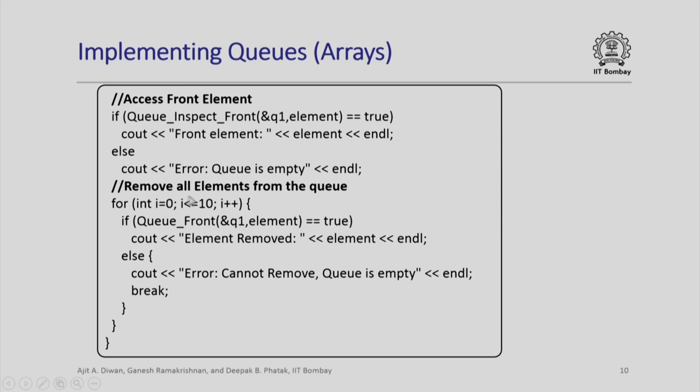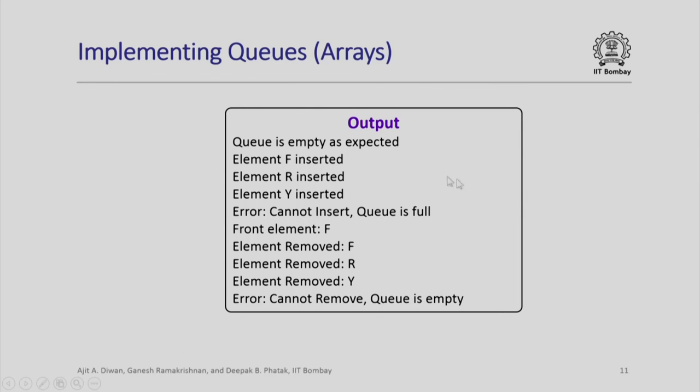Here again I have used an artificial iteration which runs 10 times. We know that in this example our maximum size is only 3, so after getting 3 elements out of the queue we will suddenly hit upon an error because queue is empty and I cannot remove any further. Like last time, the output of this program will be exactly like this: queue is empty as expected at the beginning, then the elements are inserted one after another, then I will get an error saying I cannot insert any new element, and finally when I examine the front element and subsequently I remove all the elements from the front in that order F, R and Y. This was a very simple and straightforward implementation. Next session we will discuss the implementation of queues using linked list. Thank you.